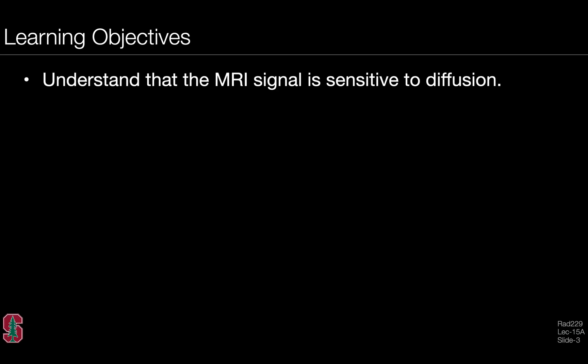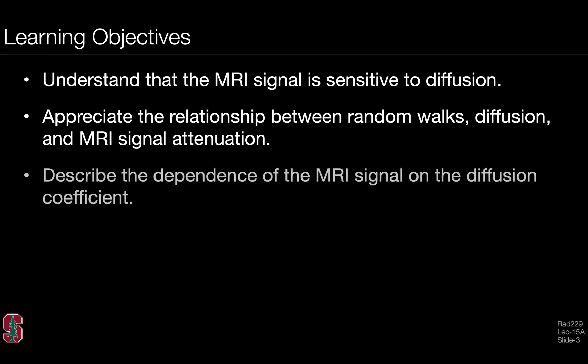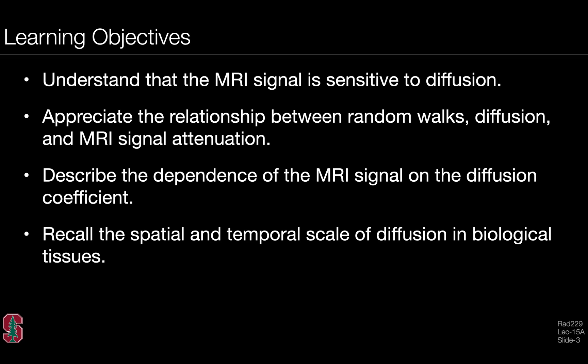The learning objectives for this lecture include being able to understand that the MRI signal is sensitive to diffusion, to appreciate the relationship between random walks, diffusion, and MRI signal attenuation, to describe the dependence of the MRI signal on the diffusion coefficient, and to recall the spatial and temporal scale of diffusion in biological tissues.